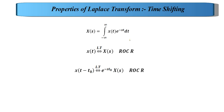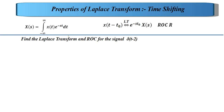Now we'll see how to solve questions related to time shifting. The first question is: find the Laplace transform and the ROC of the signal δ(t - 2). Using the time shifting property, x(t - t0) transforms to e^(-s*t0) X(s). Recall from a previous lecture that the Laplace transform of δ(t), the impulse signal, is equal to 1.